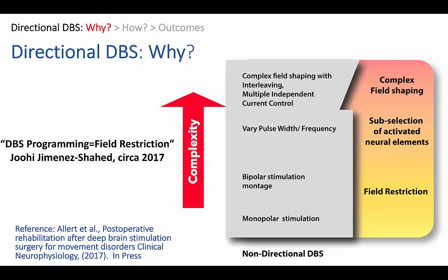We tend to start with monopolar stimulation, and if that doesn't work, we do a bit of field restriction by finding a suitable bipolar stimulation montage. And if that doesn't work, we try to sub-select the activated neural elements by varying things like pulse width and frequency. If that doesn't work, as a last resort, we do complex field shaping using technologies such as interleaving and multiple independent current control systems.